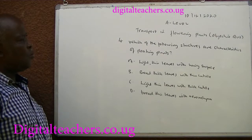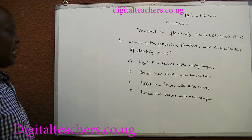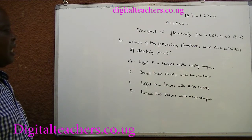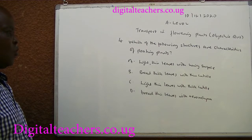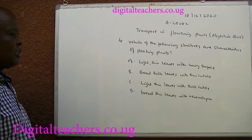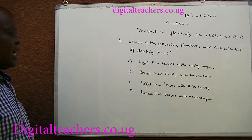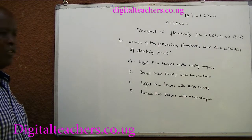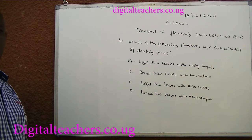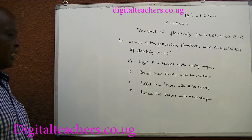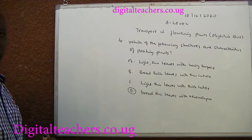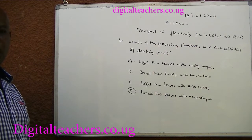Number 4. Which of the following structures are characteristics of floating plants? A. Light, thin leaves with hairy surface. B. Broad, thick leaves with thin cuticle. C. Light, thin leaves with thick cuticle. D. Broad, thin leaves with aerenchyma. You can pause and answer. The answer is D. Aerenchyma helps in the floating.